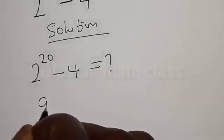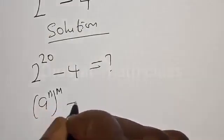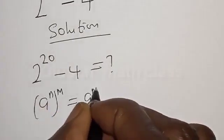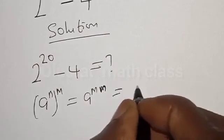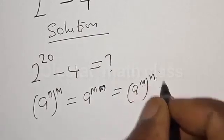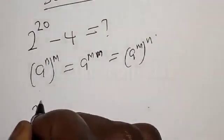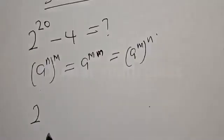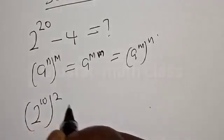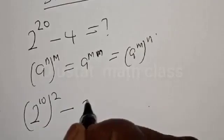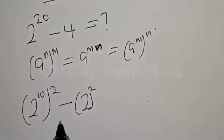Remember, if you have a raised to power n, raised to power m, that is the same as a raised to power m·n, which is equal to a raised to power m raised to power n. Then the equation becomes 2 raised to power 10 squared minus 4, where 4 can be expressed as 2 squared. This is a difference of two squares.